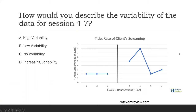The first question is a graphing question. Don't be intimidated by graphing questions — they should be the easiest questions on the exam, in my opinion. All you're doing is looking at a graph and saying either where something goes or what the graph says. We do visual analysis in ABA; that's how we look at graphs. So what you want to understand is what the question is asking. This question says: how would you describe the variability of the data for sessions four through seven? Let's look at four through seven.